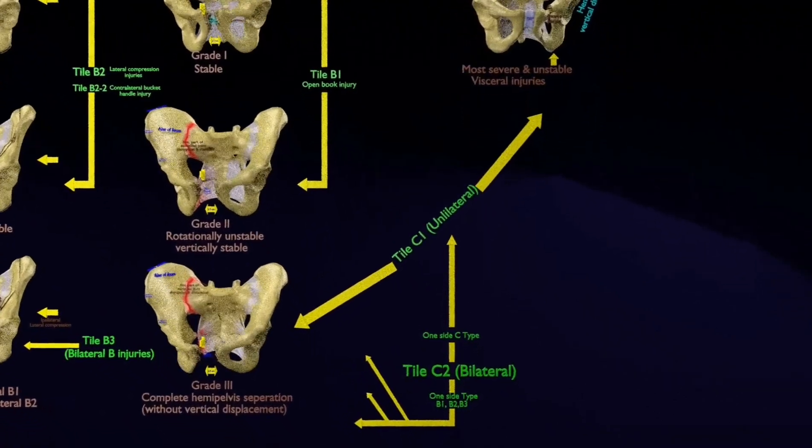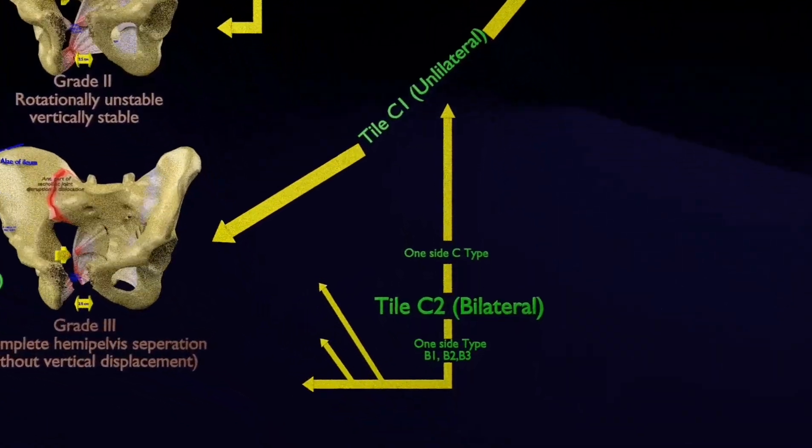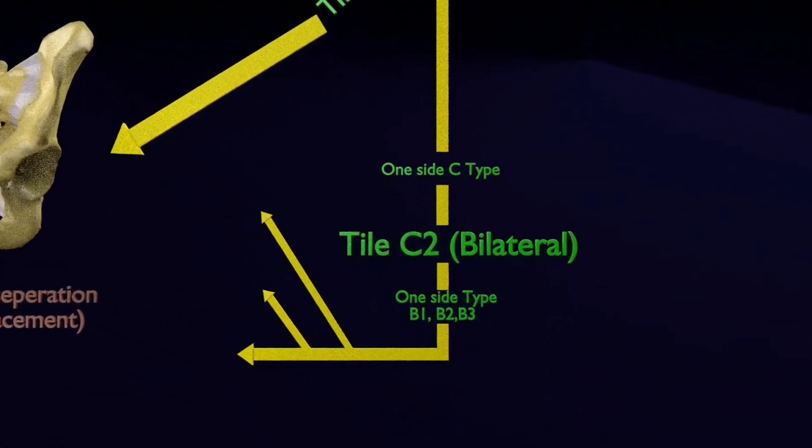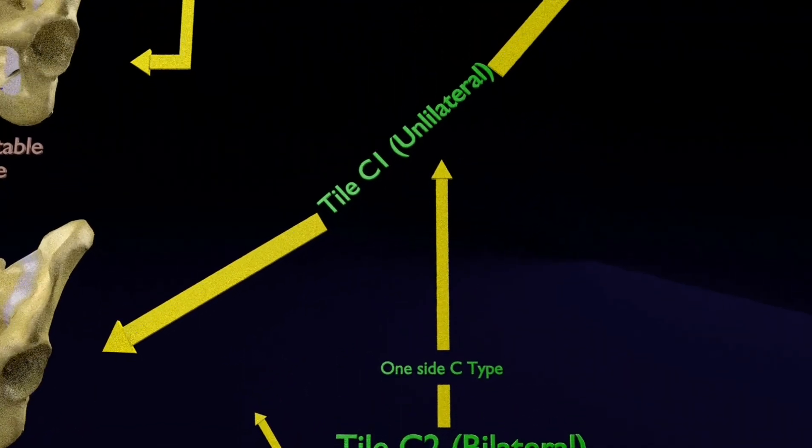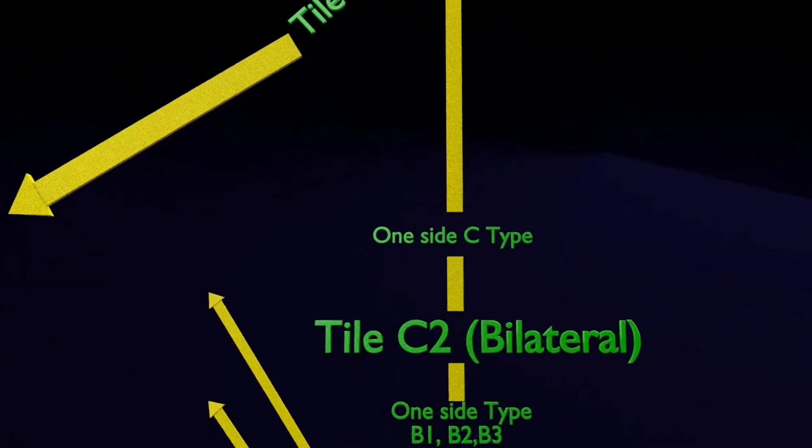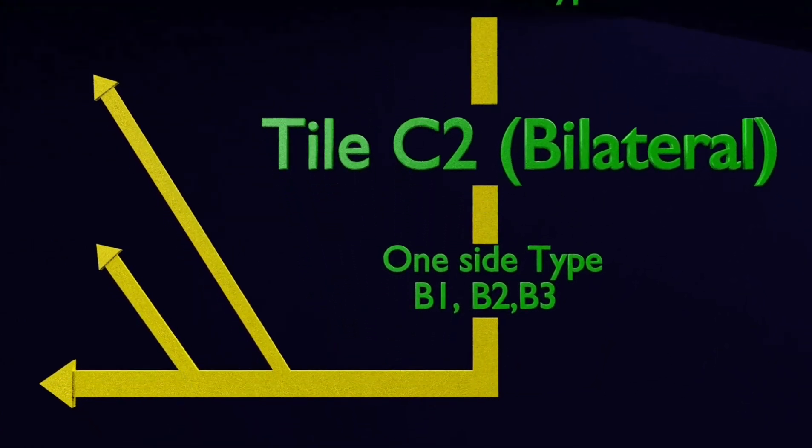The Tile C2 type fracture is a bilateral fracture in which one side Tile type C is associated with the other side being one of the any three B types, which are B1, B2, and B3.